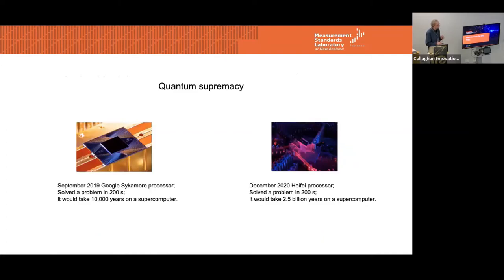Currently, the state of the art is shown on these images. On the left is a Google Sycamore processor. It has 53 qubits, and it was used to solve a problem in a couple of minutes. It is calculated that it would take about 10,000 years on a top supercomputer. On the right is another processor made by a team in China. It was used to solve another problem again in a couple of minutes, and it is calculated it would take billions of years on a supercomputer.